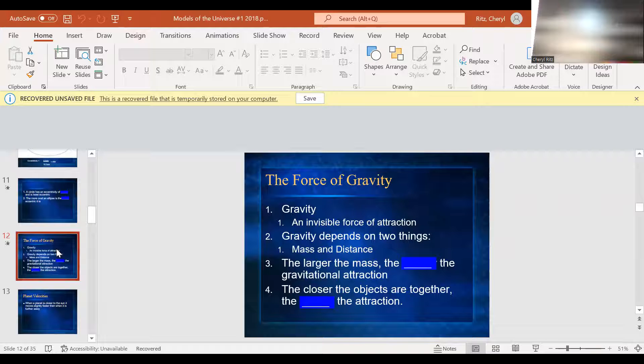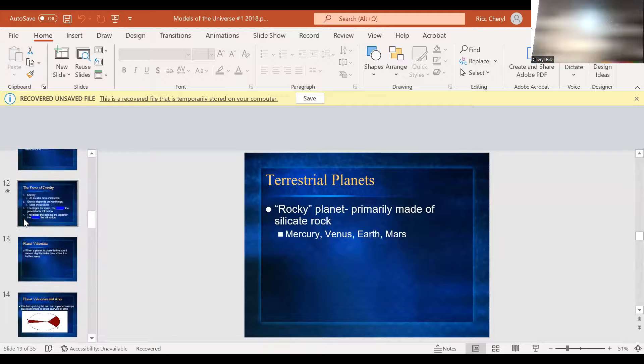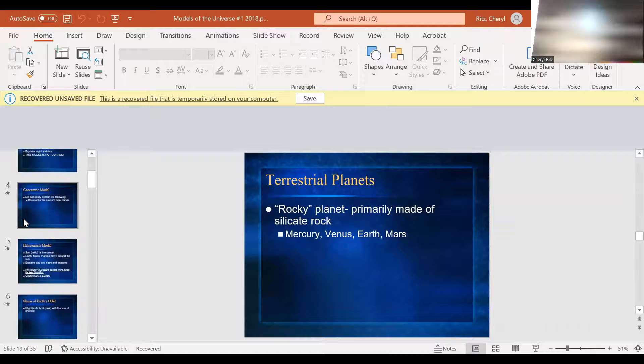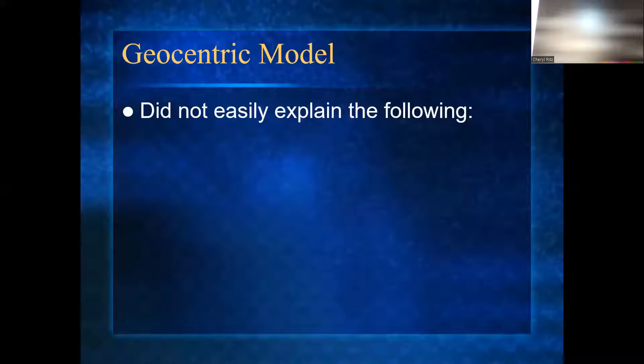So we already learned the two different models of the solar system. Remember the geocentric is when they said geo stands for earth is the center and the planets go around earth. And helio, what does helio stand for? Sun, and the planets go around the sun. By the way, which one's correct? Helio with a sun in the center.